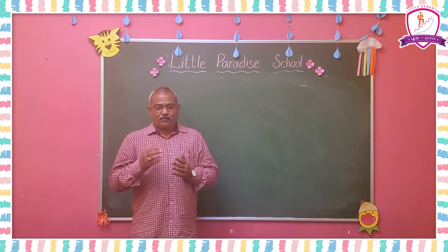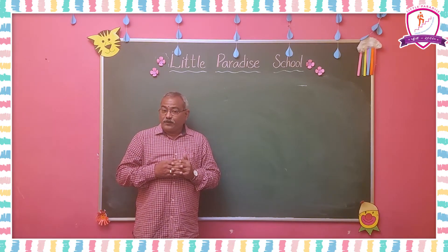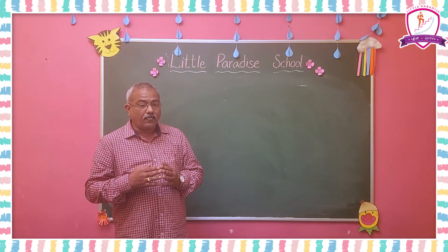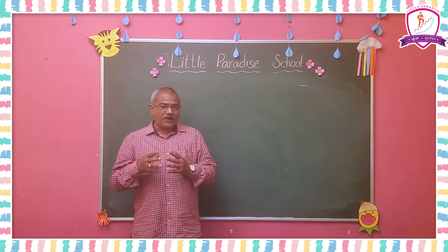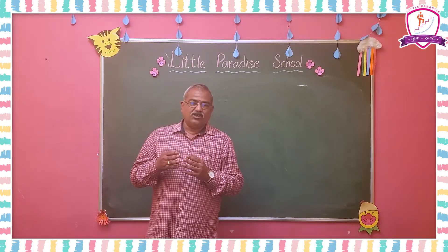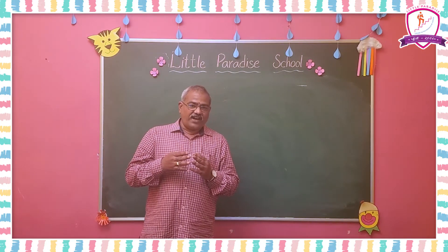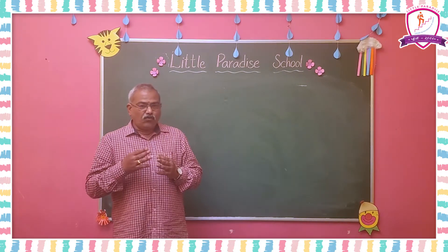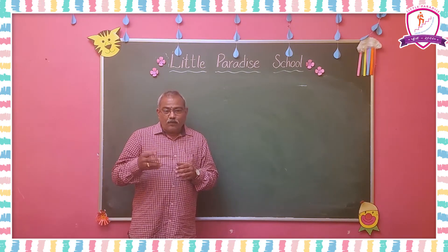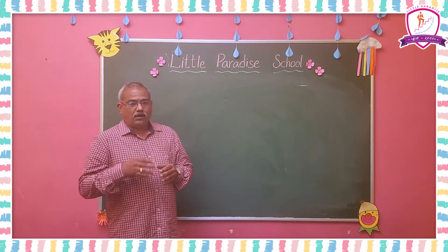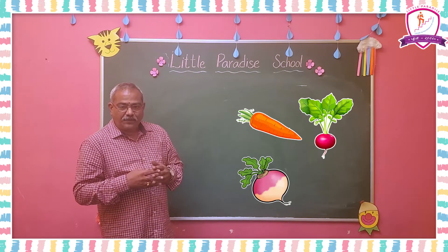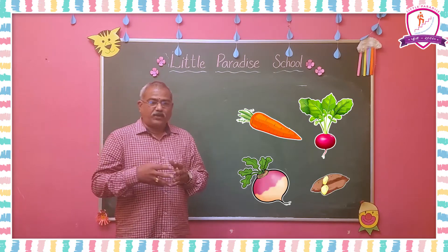Food comes from different parts of the plant. Roots — in some plants, roots store food. These food-laden roots get modified into edible form. Some examples are carrot, radish, turnip, and sweet potato.